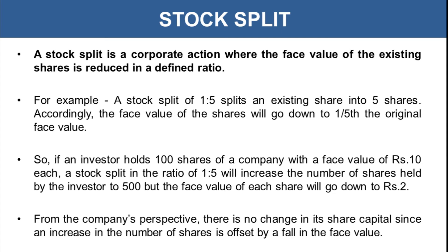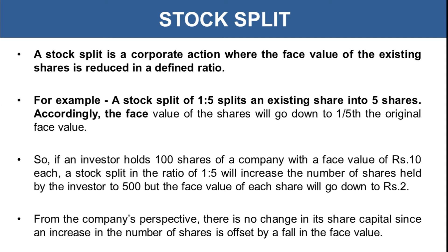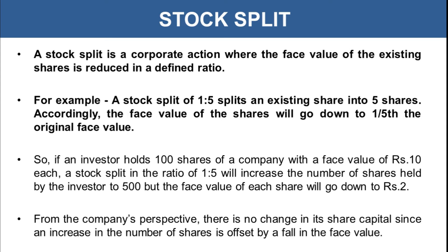For example, a stock split in the ratio of 1:5 splits one existing share into five shares. The one share you own would be divided into five shares. It's not like you've been provided extra four shares for free — yes, the number of shares has increased, but the value of each share has decreased. The face value will go down to one-fifth of the original face value, so the overall value remains the same, providing more liquidity.